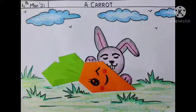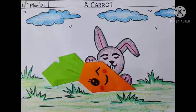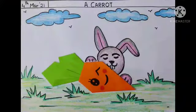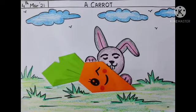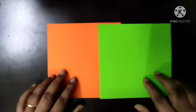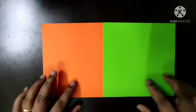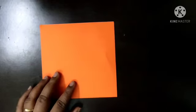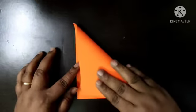Good afternoon children. Today we are going to learn how to make a carrot craft step by step. First, take two origami papers, orange and green color. Keep green aside and make a triangle fold.